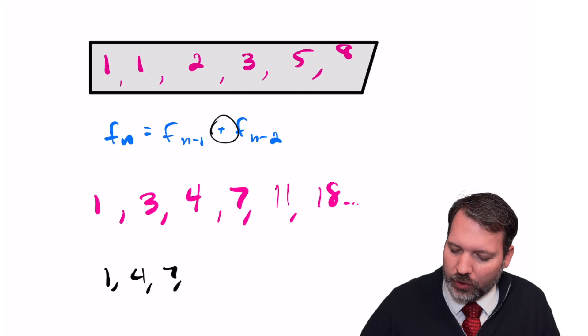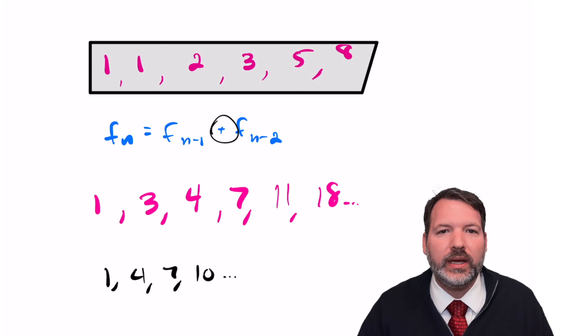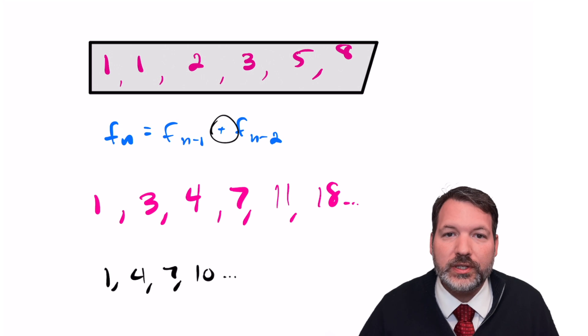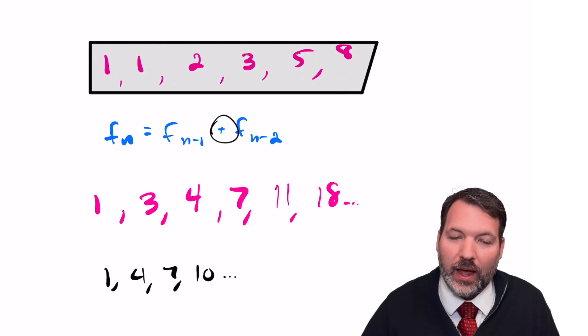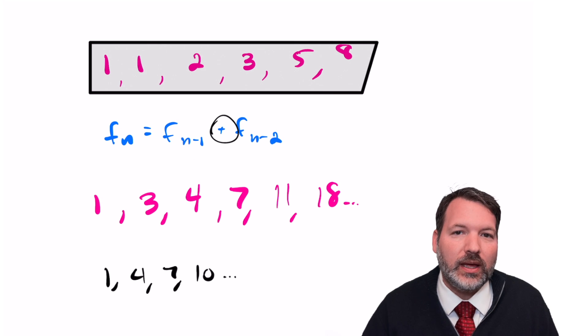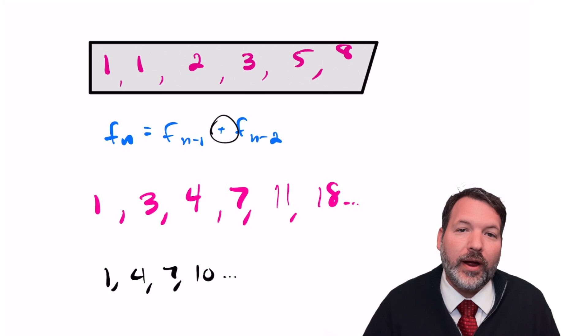Something like, for example, 1, 4, 7, 10 is arithmetic if we keep adding that common difference of 3 over and over again. Because we're adding something with things like the Fibonacci numbers and the Lucas numbers, it's tempting to think that they're going to behave like other arithmetic sequences.